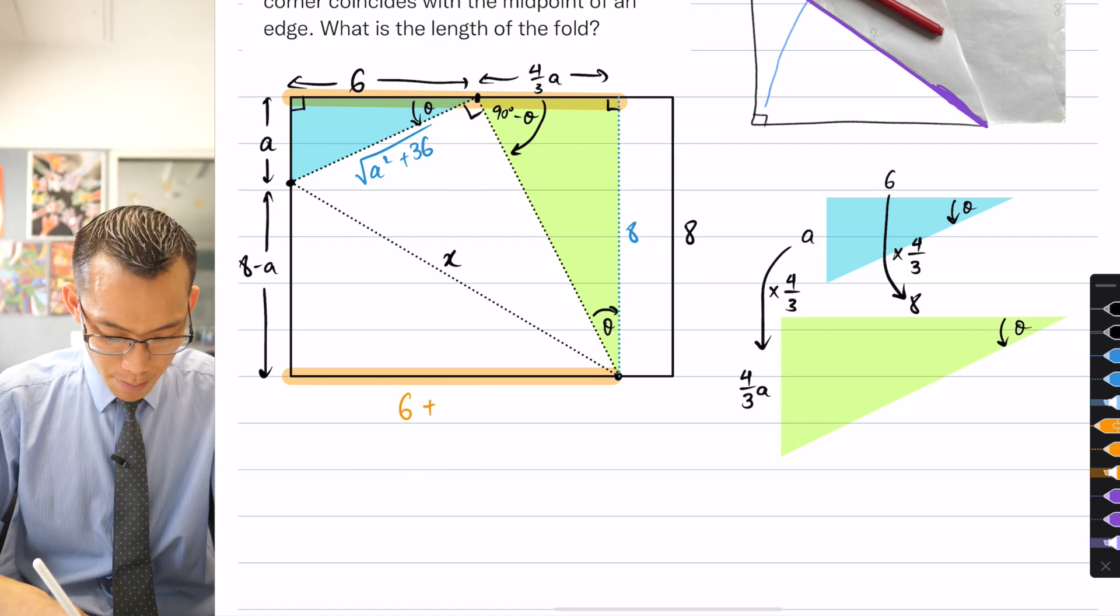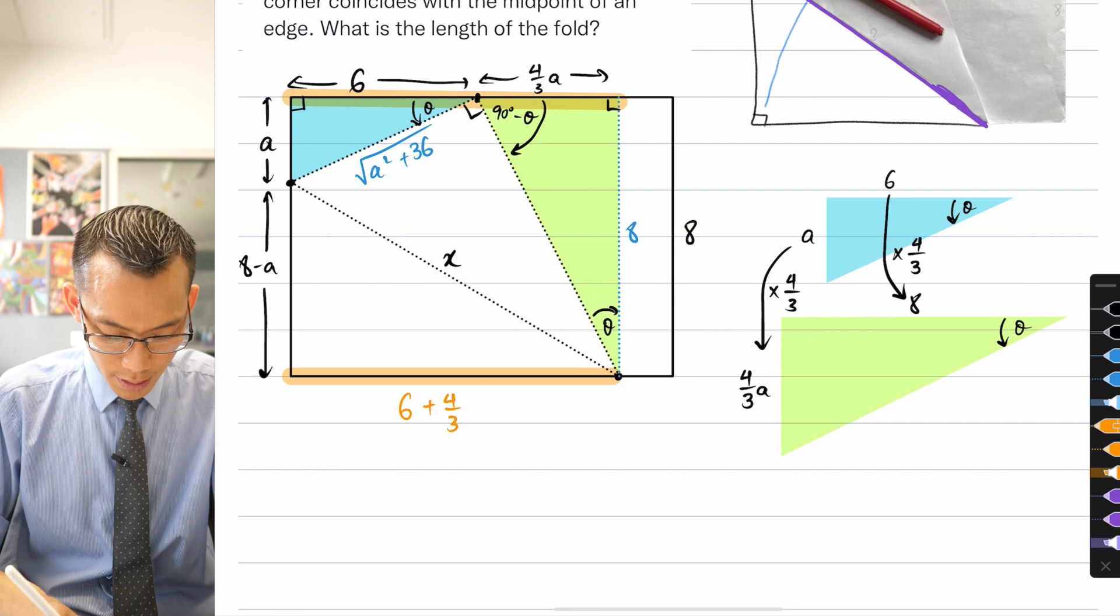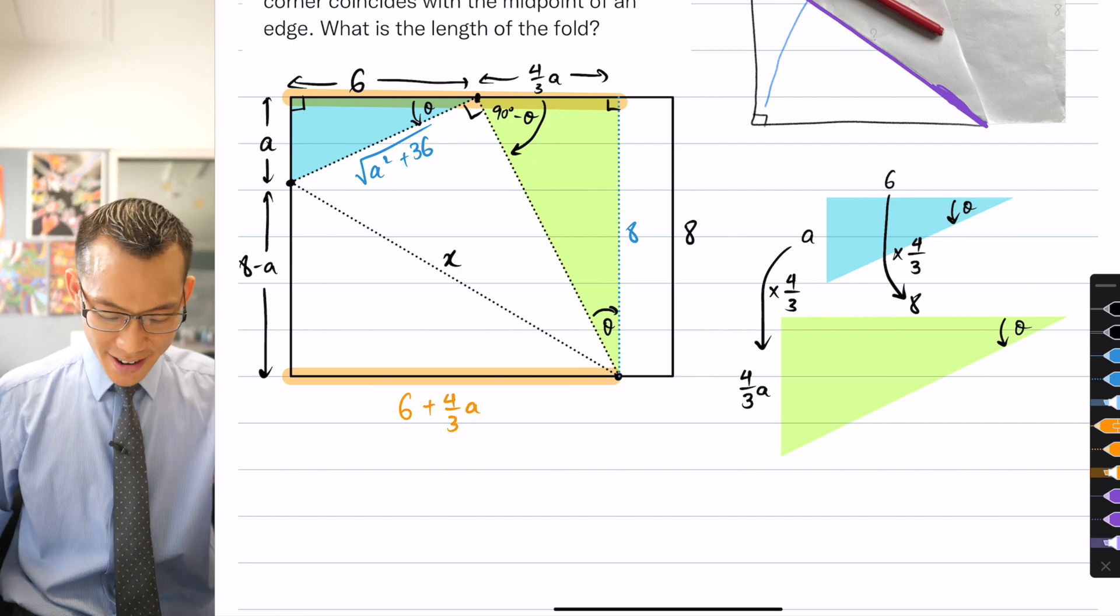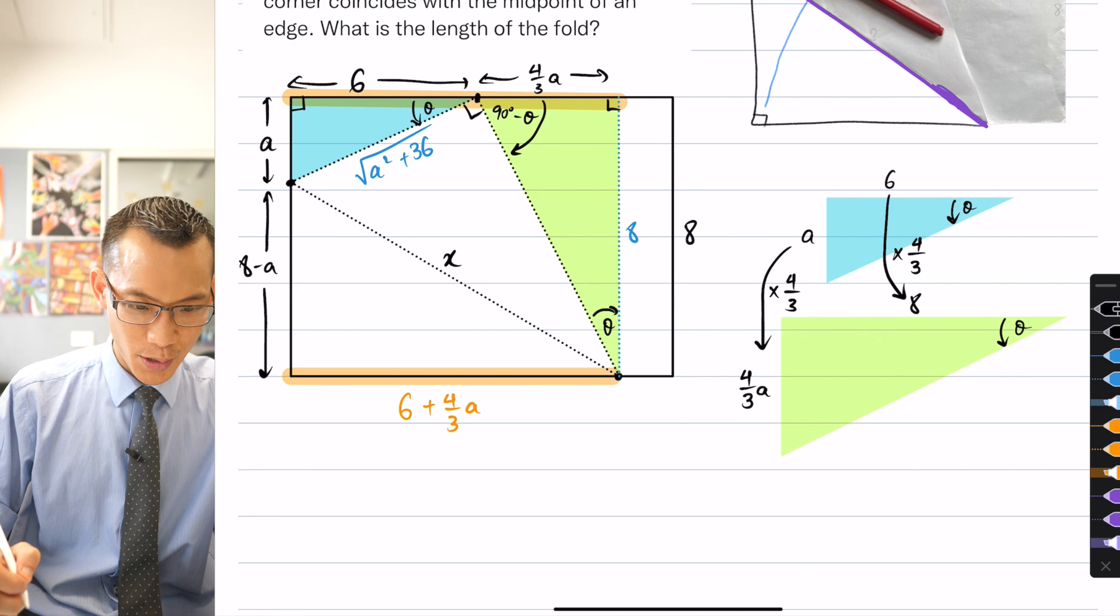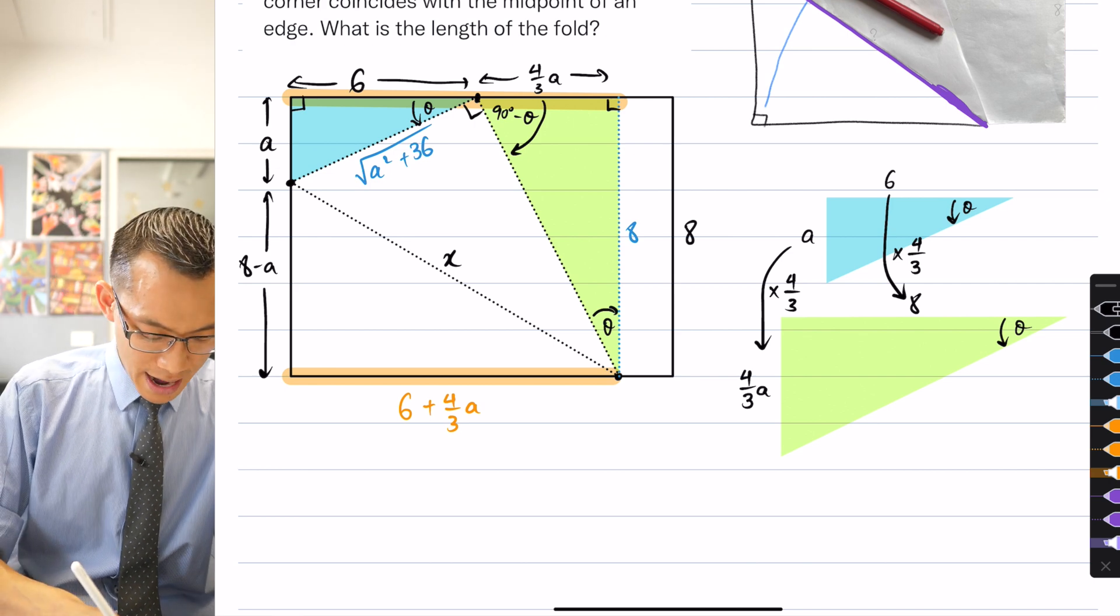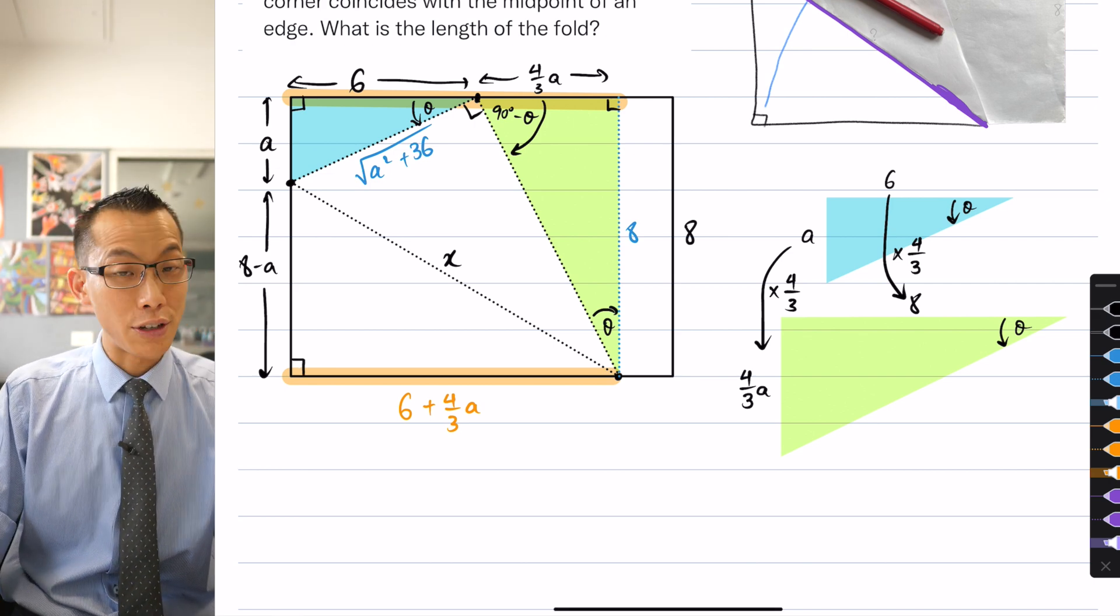So I can just do it by addition, right? This is 6 plus 4 thirds A. Okay, now have a look at this. This is brilliant. We are so close. If you look closely, I've got a right angle triangle here in the corner.